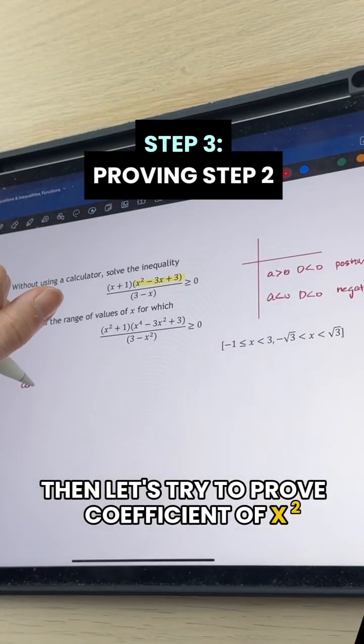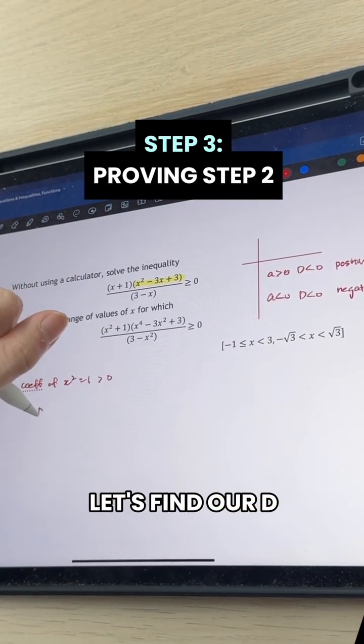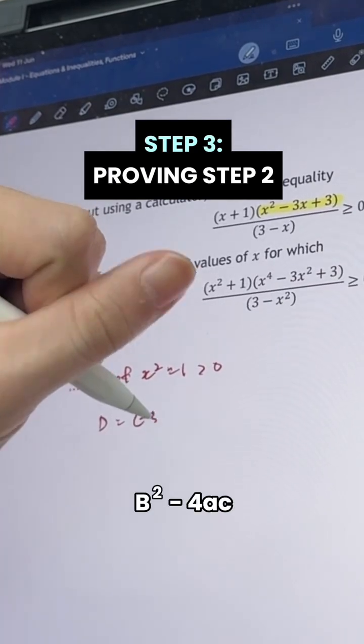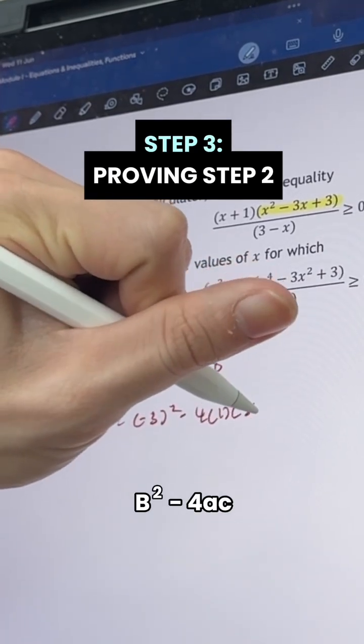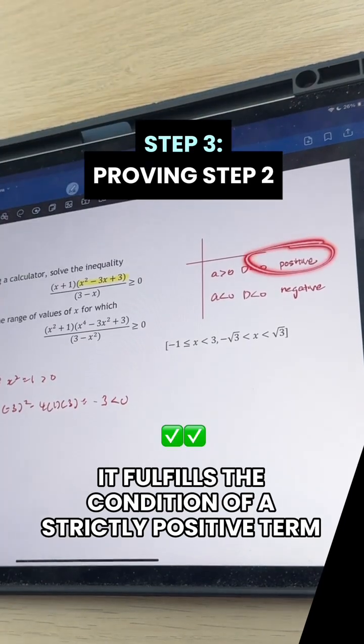So let's try to prove coefficient of x squared. In this case, it's 1, which is positive. Let's find out d. d is our discriminant, b squared minus 4ac. This is equal to minus 3. Clearly this is negative. So it fulfills the condition of a strictly positive term.